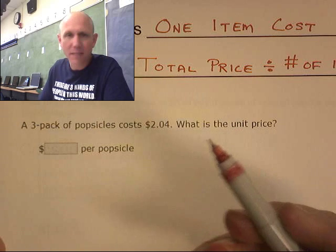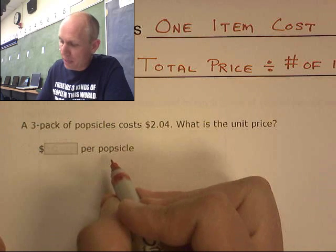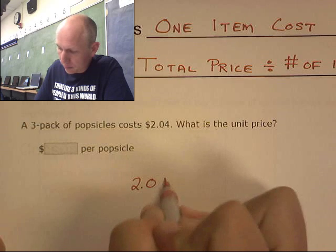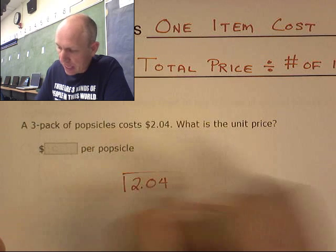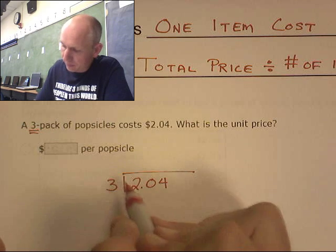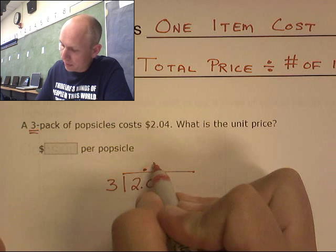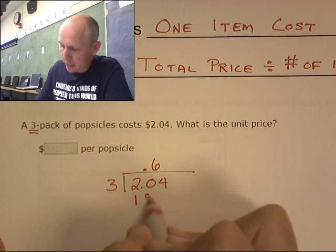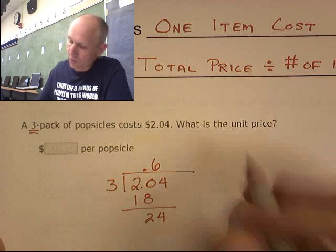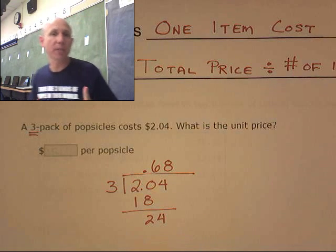It's a division problem. It's the total price, which is 2.04 divided by the number of items. And I'm buying what? Three items, a three-pack. Three goes into two, six times. That gives me an 18, remainder of two. Three goes into 24 eight times. So the cost of one popsicle would be 68 cents. That's the unit price or the unit cost, the cost of one item.